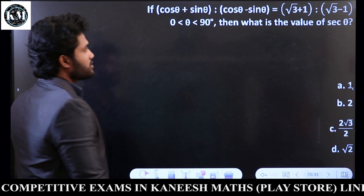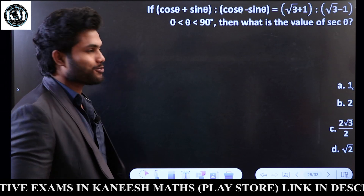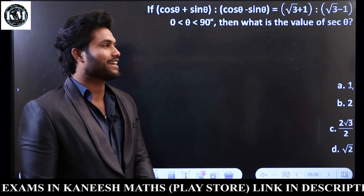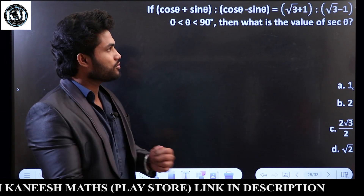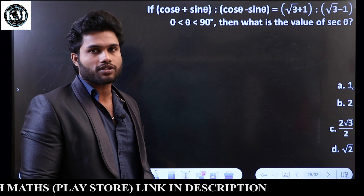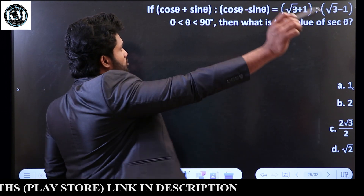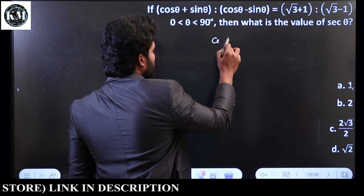If cos θ plus sin θ is equal to (√3 + 1) / (√3 - 1), then find the value. So A is to be C — we need to deform it.